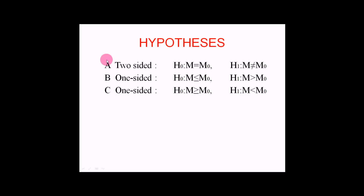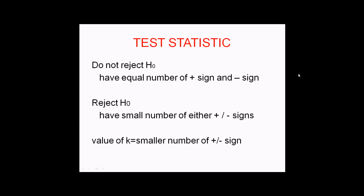These are the hypotheses for the one-sample sign test. It is divided into three cases: case A, case B, and case C. For test statistics, do not reject H₀ when we have an equal number of plus signs and minus signs. Reject H₀ when we have a small number of either plus or minus signs.